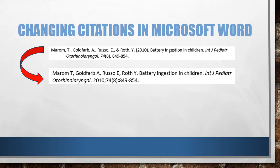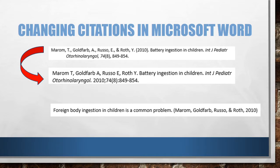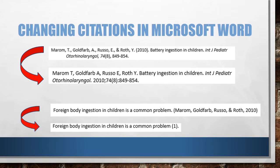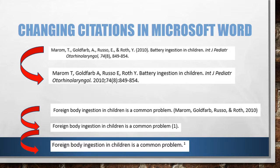Citation management software is also capable of formatting citations within your text. It can display author names and dates, numbers, or superscripted numbers, or many more. If you're a student, your faculty may require a specific citation style for assignments that you write. If you're publishing a paper, the journal you're submitting to will have a required citation style.